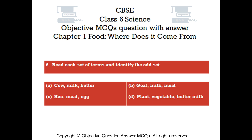Question number 6. Read each set of terms and identify the odd set. Option A: Cow, milk, butter. Option B: Goat, milk, meat. Option C: Hen, meat, egg. Option D: Plant, vegetable, butter, milk.